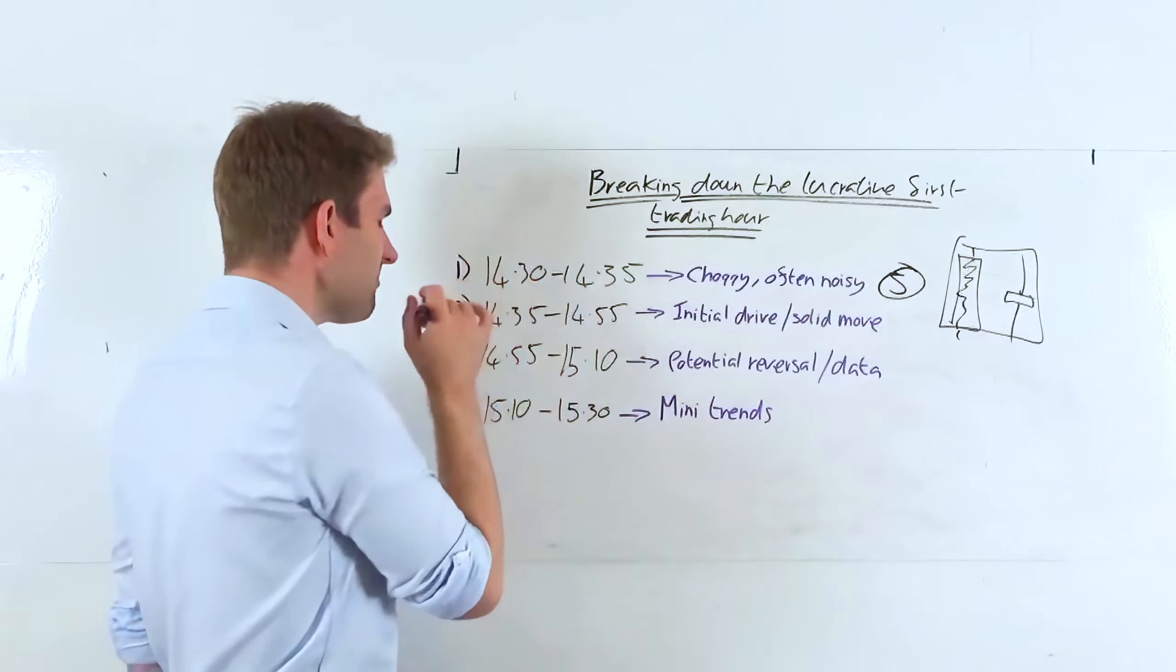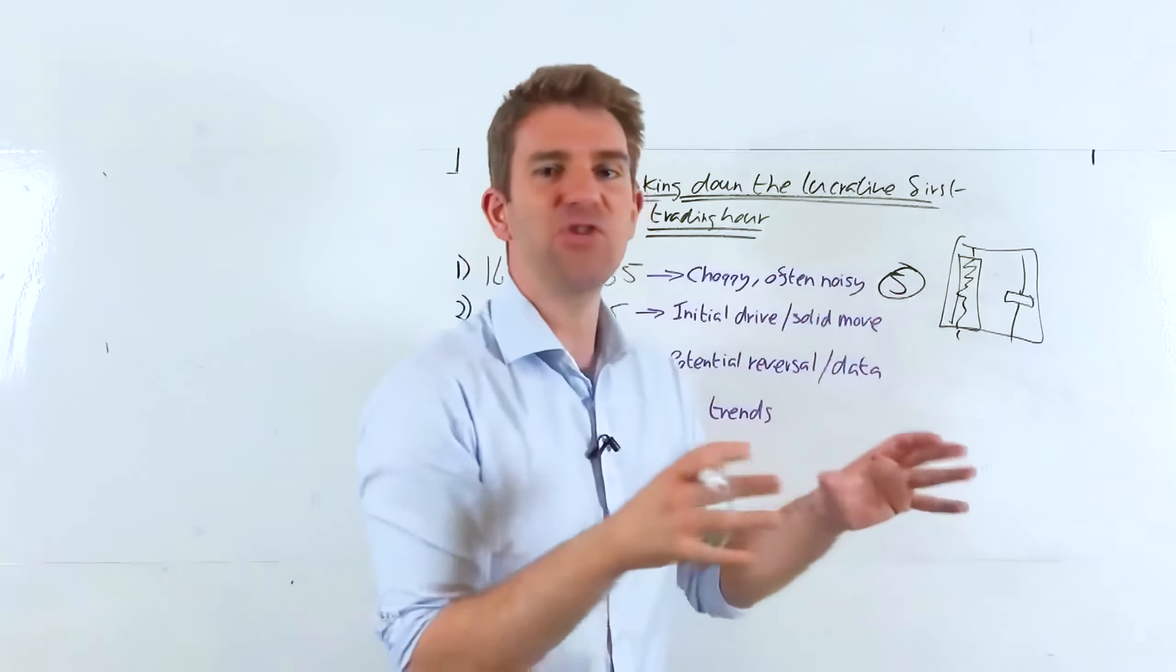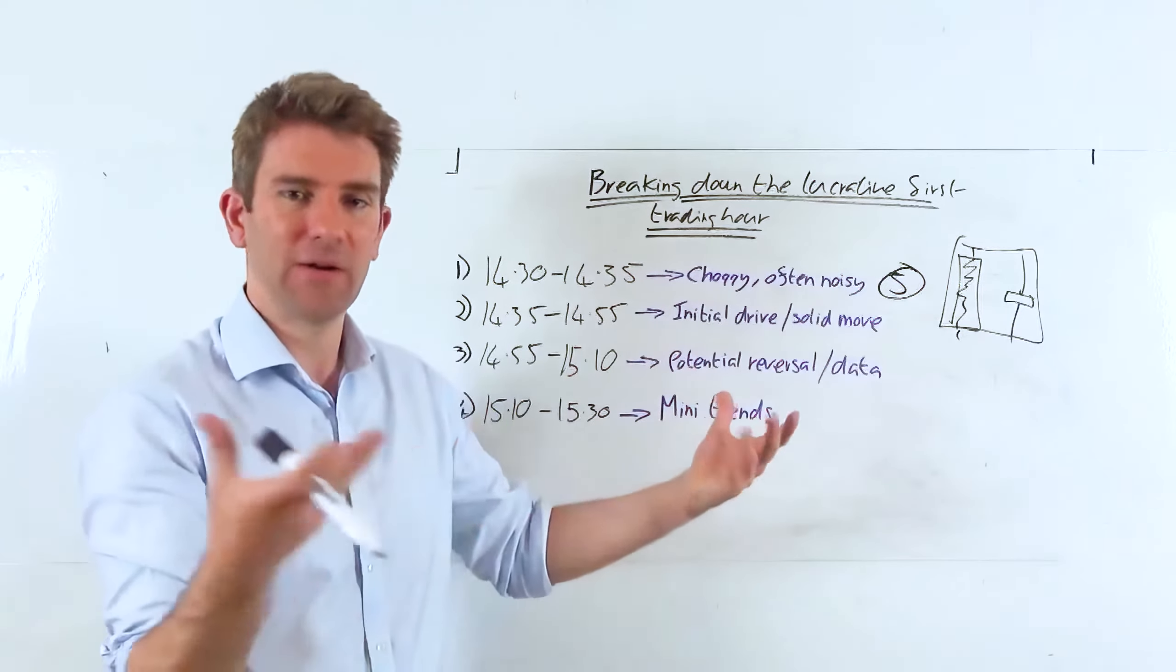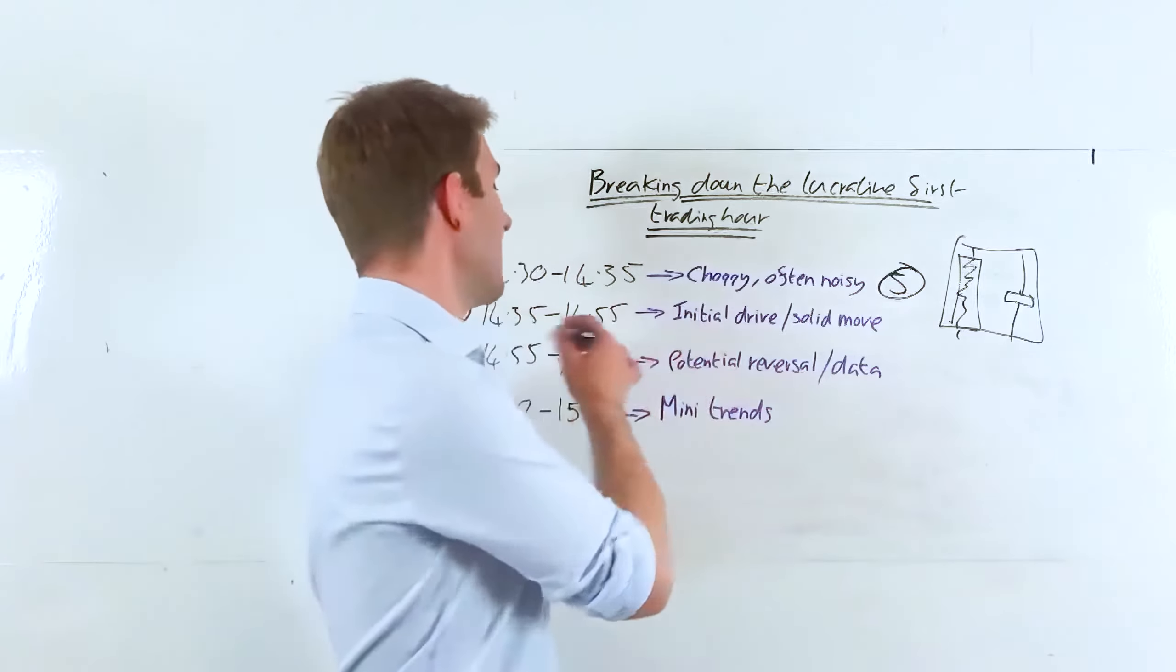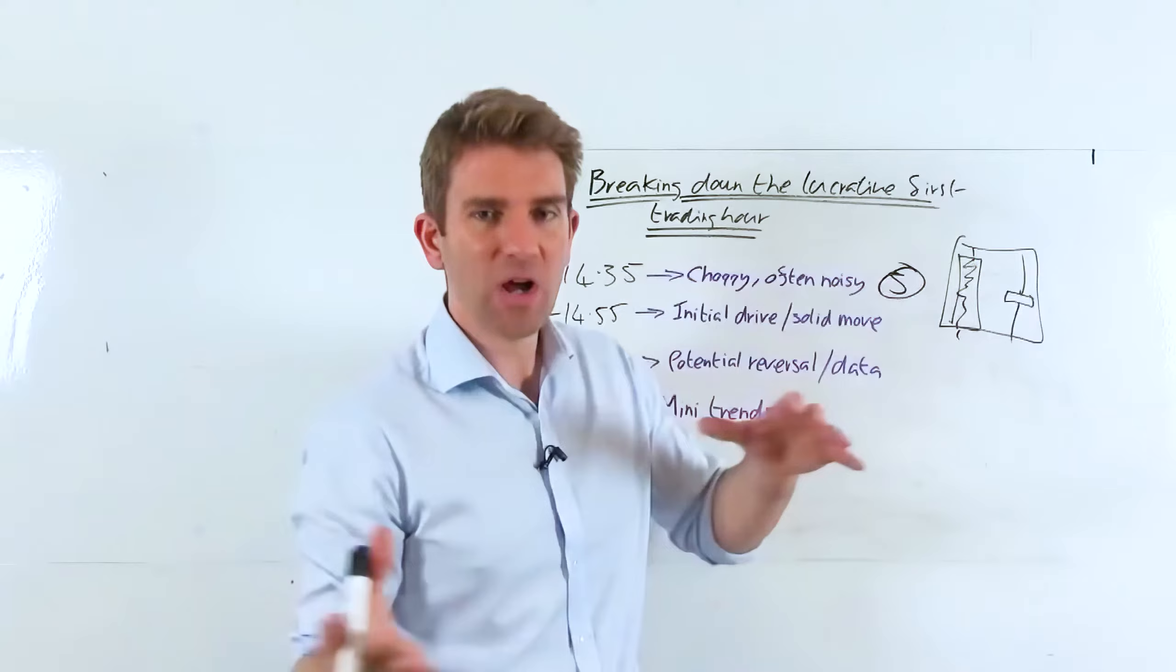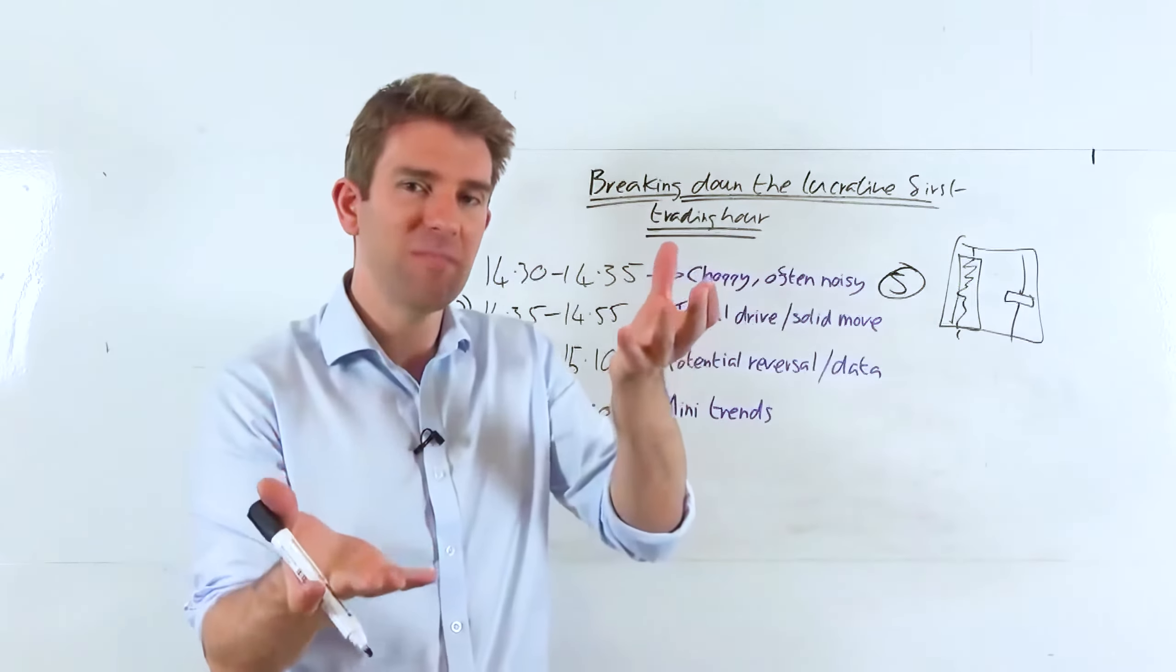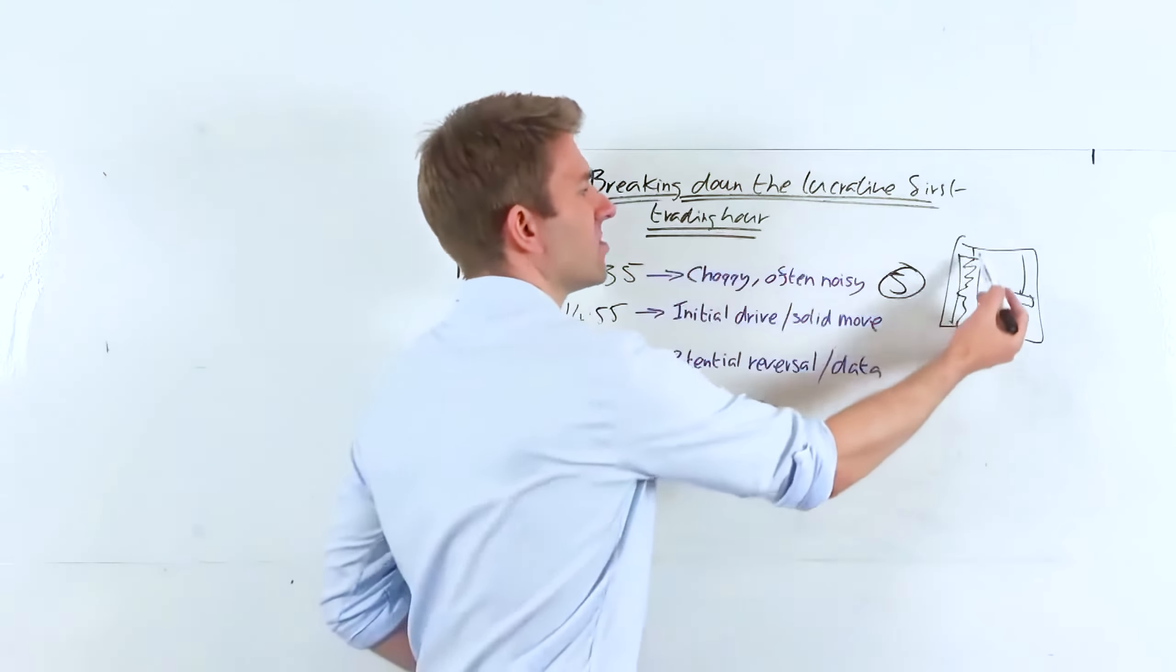So then, segment two, 2:35 to 2:55. This is when we get the initial drive and generally we'll get a solid move. Not always, obviously. And I've got to just generalizing here a little bit. If every day was the same, we'd probably all be billionaires, but it's not. So we have that initial drive and solid move. So get the first five minute candle and then maybe people start to now see a bit of supply, demand imbalance. Rather than that constant supply, demand imbalance shifting, we start to see maybe more buyers step in, more sellers step in. Perhaps we start to break that high, start to chug.